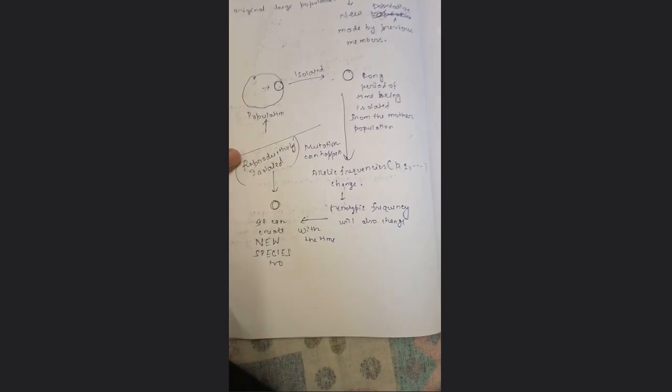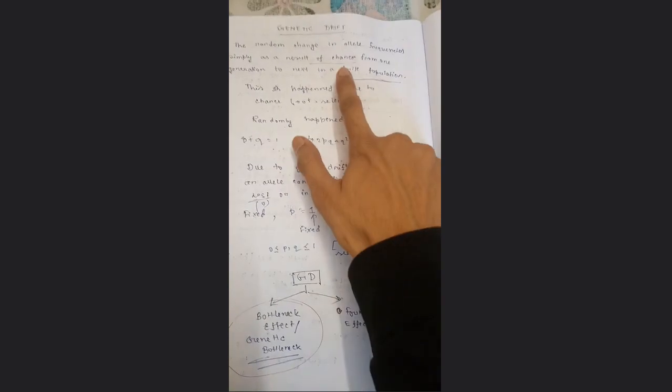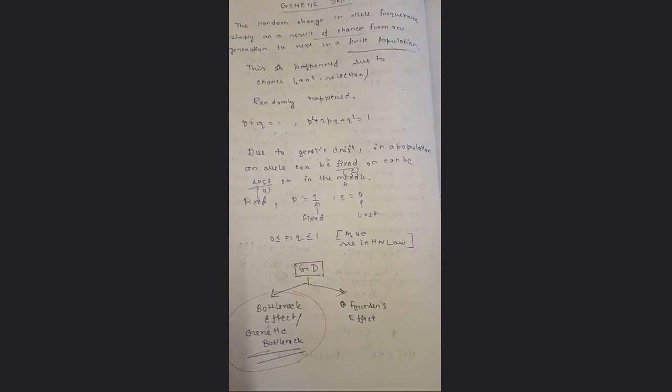With time, the isolated population can become reproductively isolated from the parental population, creating new species — this is speciation. Remember: genetic drift is a result of chance with no direction, unlike selection which has a direction and checks reproductive fitness. Genetic drift is guided only by chance in a finite population. Hope this helps you understand genetic drift, genetic bottleneck, and founder's effect. Thank you.